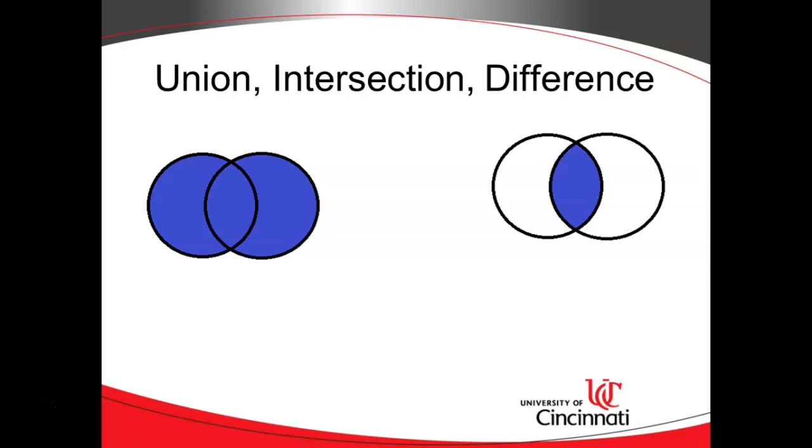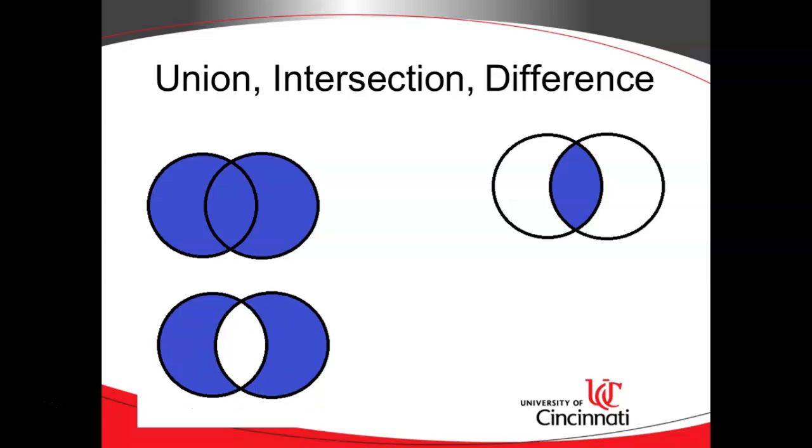Intersection is only what they have in common. Difference we can look at two ways. Difference could be the union minus the intersection, or we could look at it just one way where we have one set and we subtract out the intersection to come up with the difference.